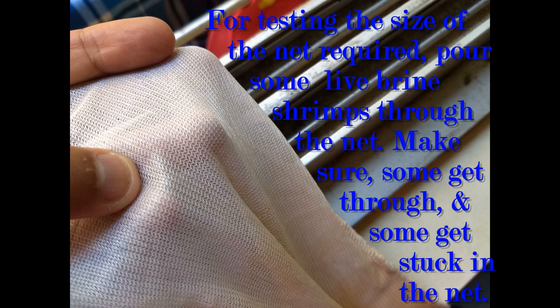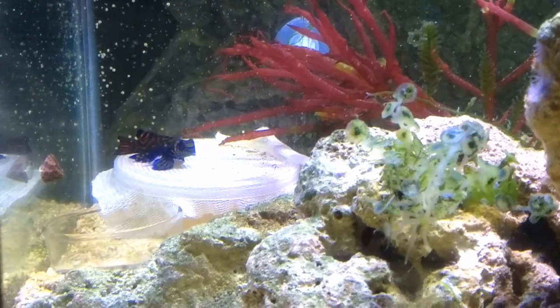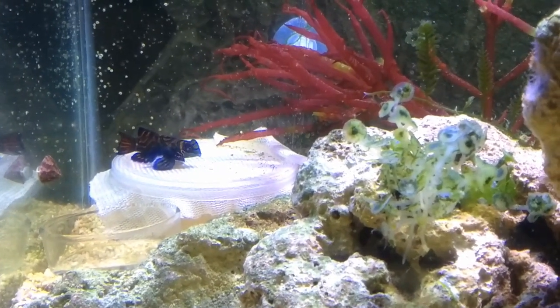You need to make sure that whatever net you're using is pretty fine so that the shrimp don't come out immediately and they come slowly, so that the mandarin or pipefish or whatever you are keeping can eat easily from it.